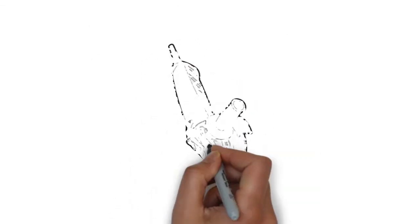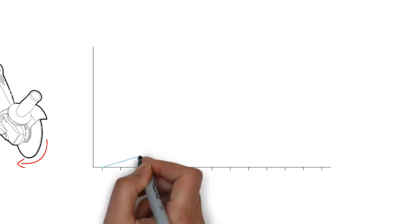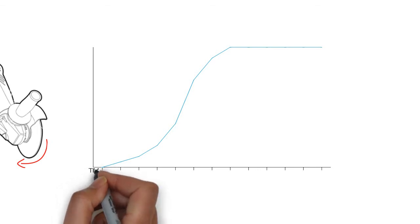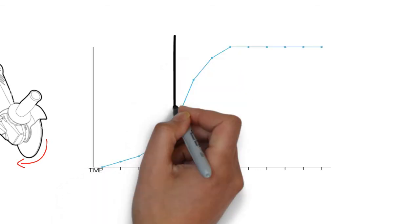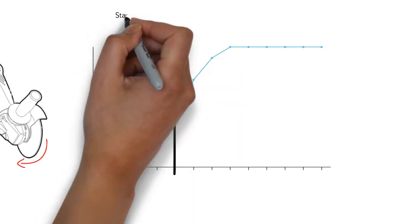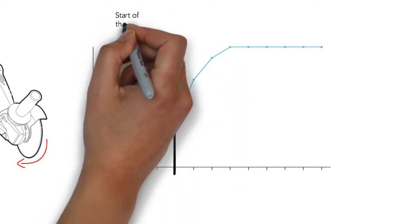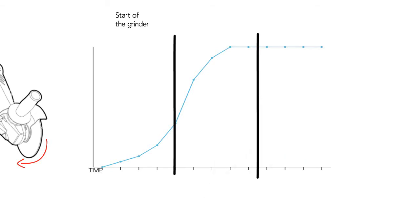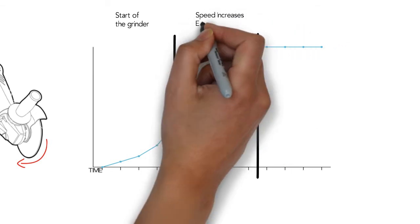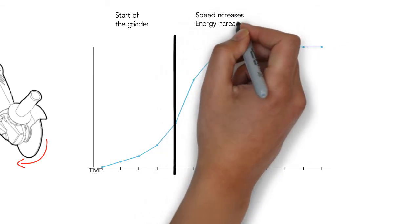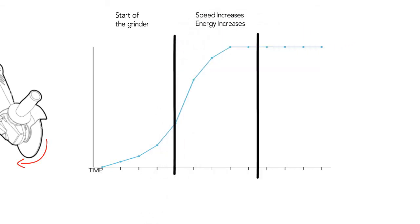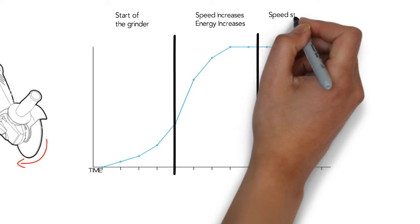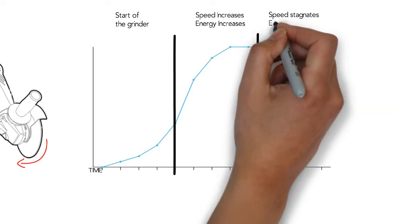Let's take a grinder that is being turned on. Here is the wheel's energy evolution. First, the electrical energy will enter the wheel, making the wheel start to turn. Second, as the rotational speed increases, the energy will increase as well. Finally, when the speed plateaus, the energy will also stagnate.